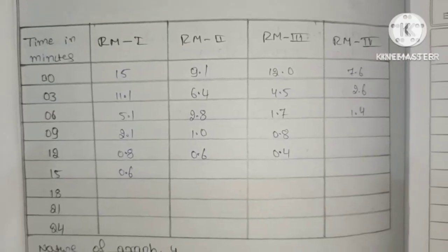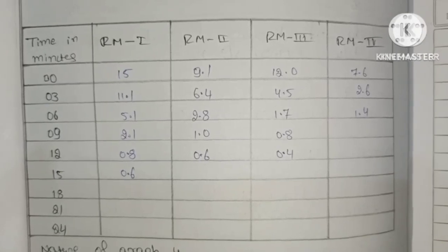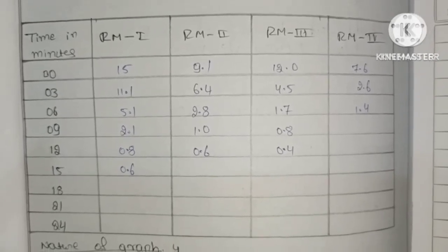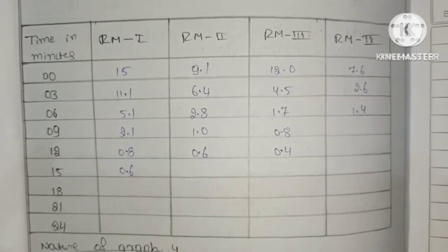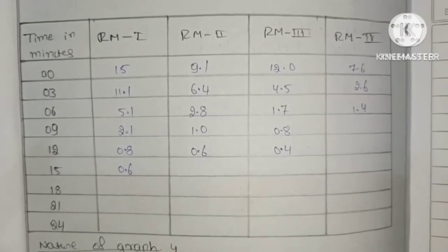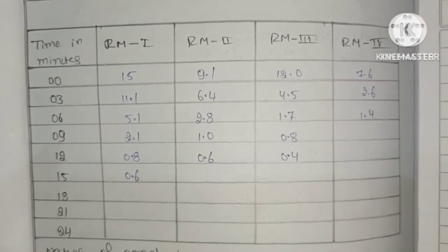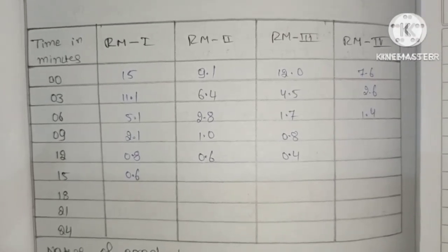For different time intervals — 0, 3, 6, and 9 minutes — the burette readings for reaction mixture 1, reaction mixture 2, reaction mixture 3, and reaction mixture 4 are recorded. Then plot a graph by taking time on the x-axis versus volume on the y-axis. We got different curves for reaction mixtures 1, 2, 3, and 4.